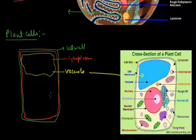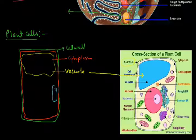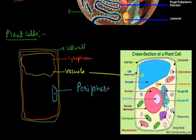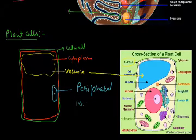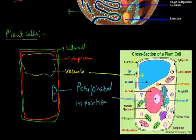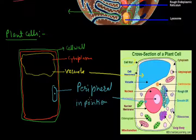The plant cell also has a nucleus, but it is present in a peripheral position. In the case of the animal cell, the nucleus is central in position.